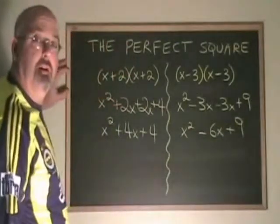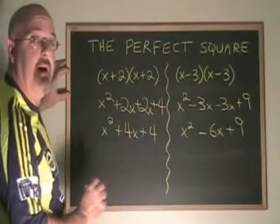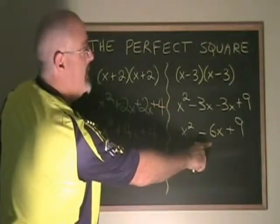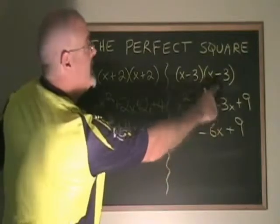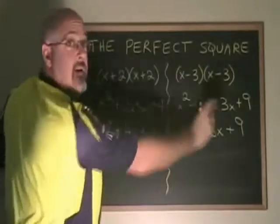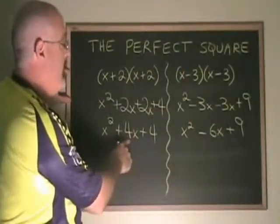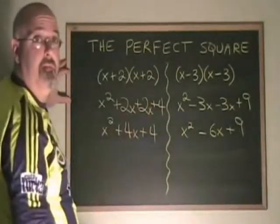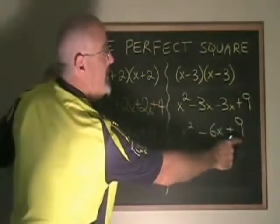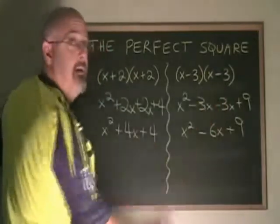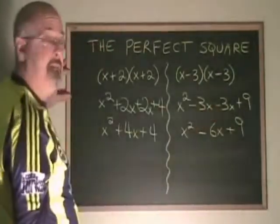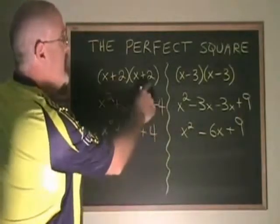When we look at these expressions, we can see a pattern emerging. The second term in the trinomial is always exactly double the second term in the binomial. Negative 6 is double negative 3. Over here, 4 is double 2. The other thing we notice is the third term in the trinomial is always the square of that same second term in the binomial. 9 is the square of negative 3. 4 is the square of 2.